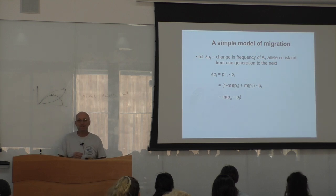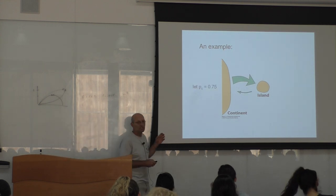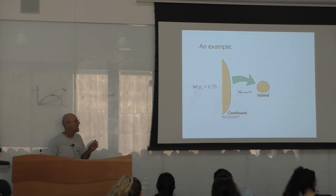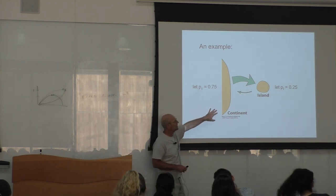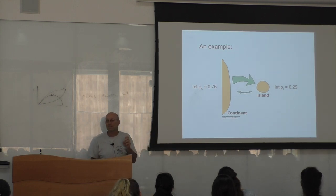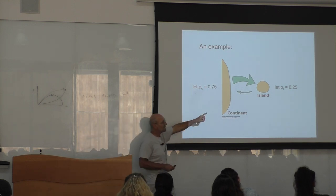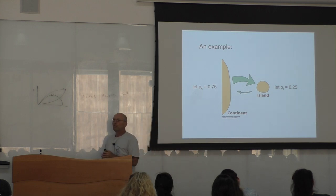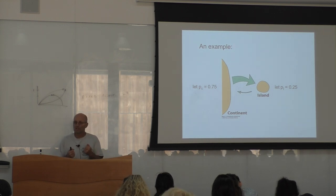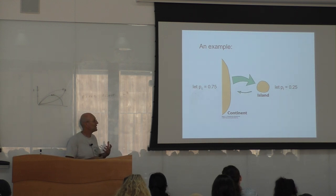Now, examples with numbers — it's a lot easier to visualize with numbers. We're going to start with a situation where there's a big difference in allelic frequency between the continent and the island. On the continent, allele A1 is found in 75% of the alleles. On the island instead, A1 is only found in 25% of the alleles. So we have put ourselves in a situation where there's a big difference between the continent and the island, because that makes the system work really well and you can understand it clearly.